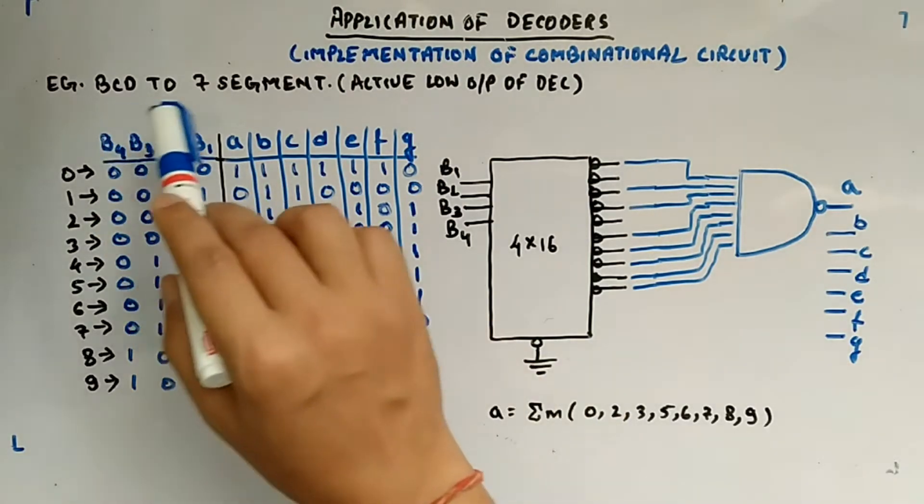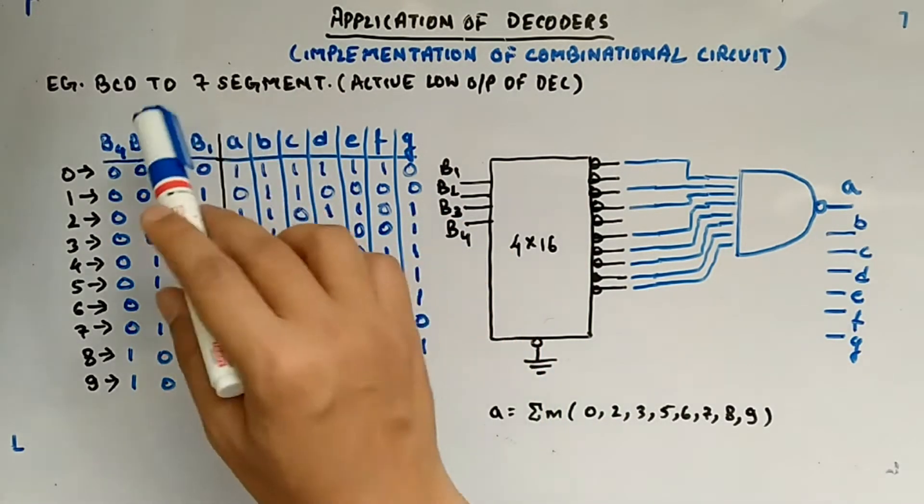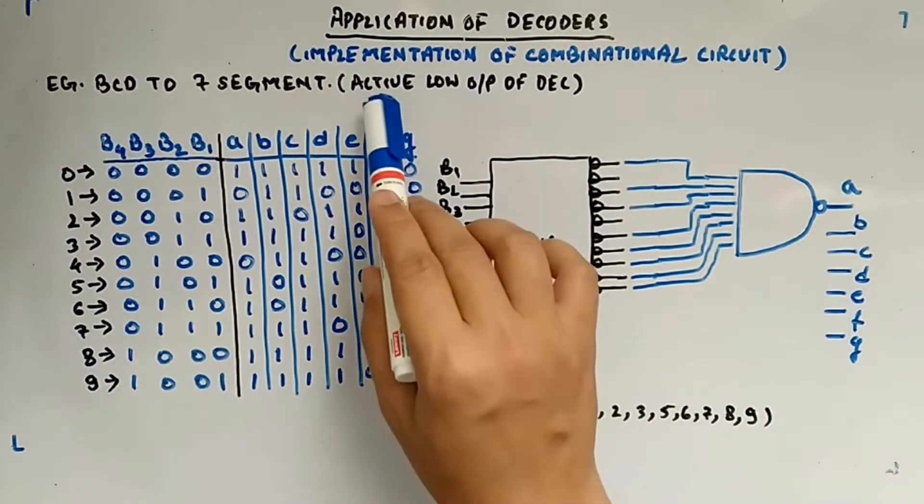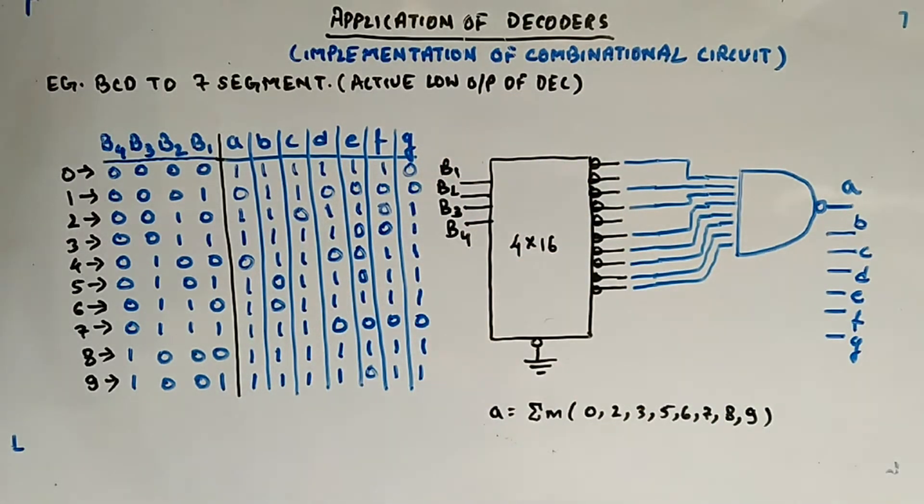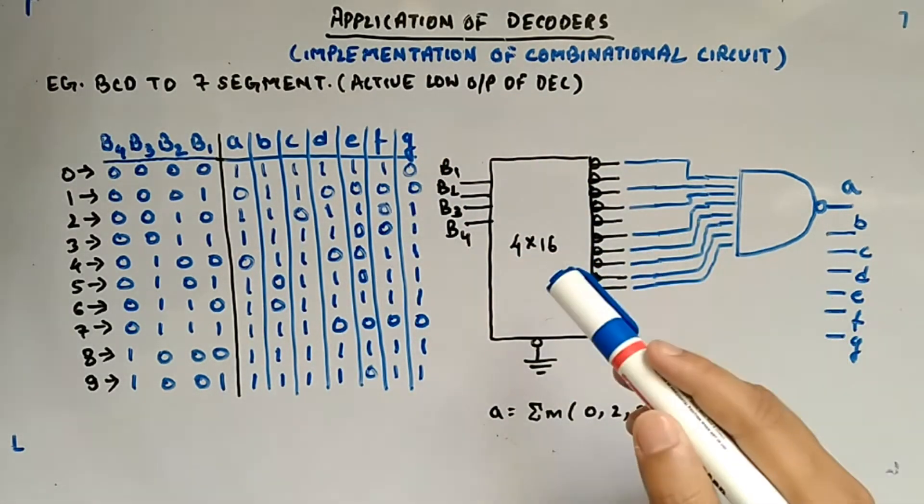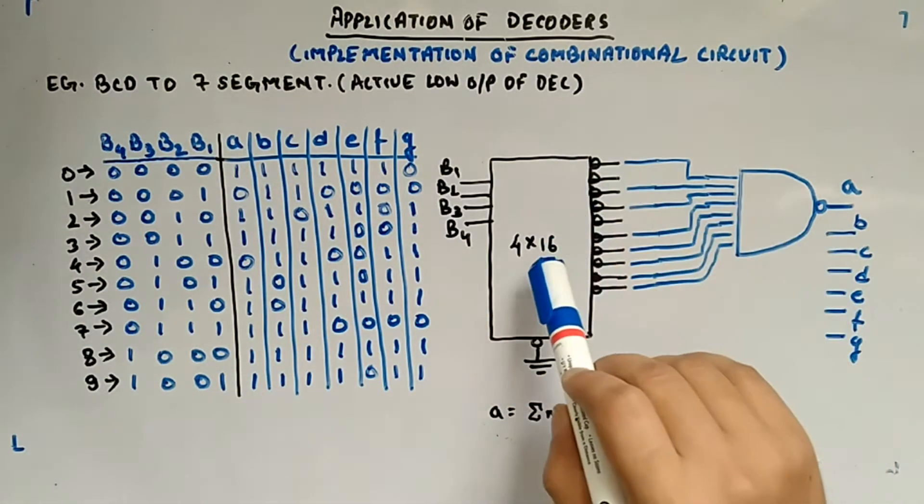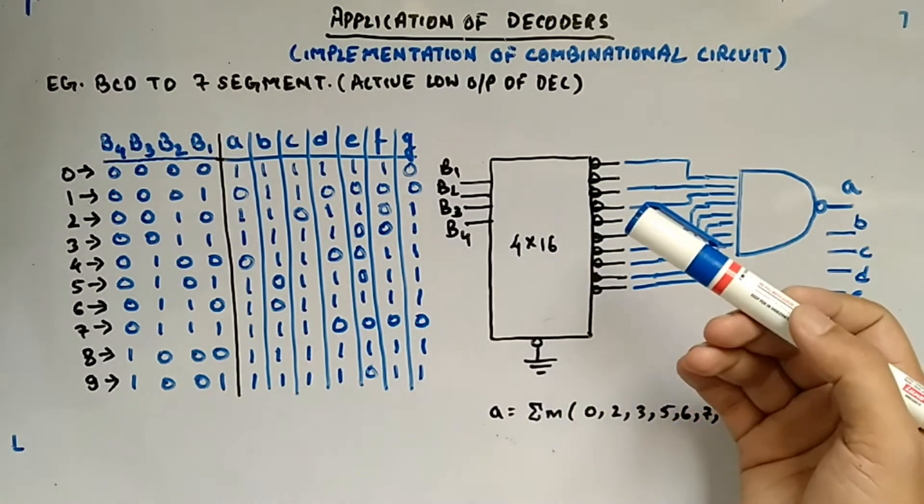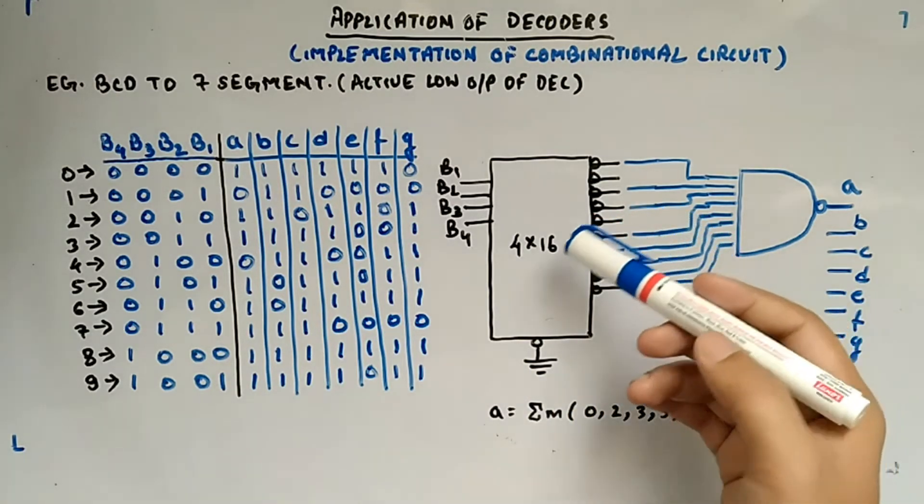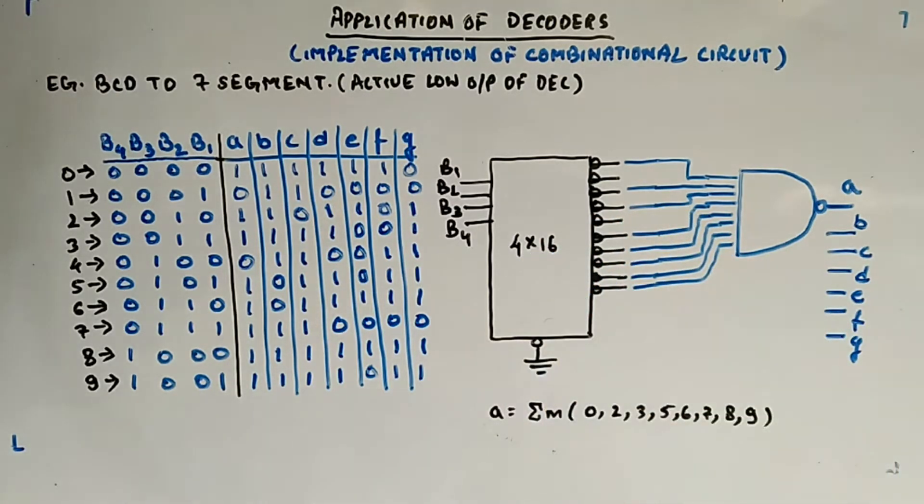Here you can see this is BCD to 7 segment display, 7 segment combinational circuit but with active low output type of decoder. Here you can see that the truth table is same but we have changed our 4 x 16 active high type of decoder to 4 x 16 active low type of decoder.